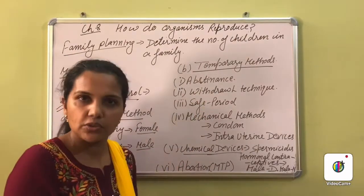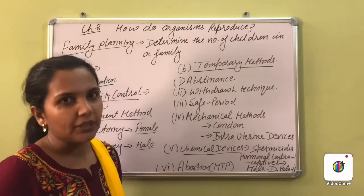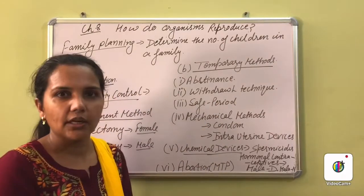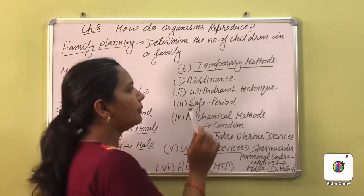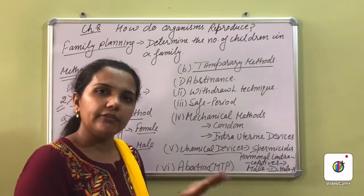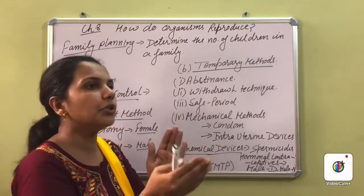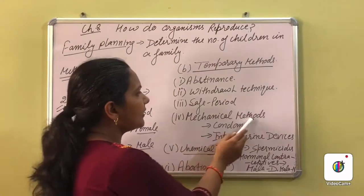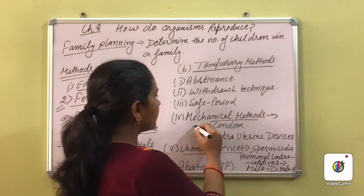The first temporary method is abstinence — no sexual contact is to be carried out. This is considered the best method. Second is the withdrawal technique — just before the shedding of semen, the penis is withdrawn from the female vagina. Third is the safe period — one week before the menstruation cycle and one week after the menstruation cycle is considered safe, during which pregnancy does not occur.